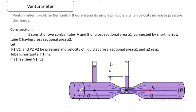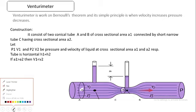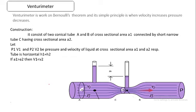As shown in the figure, it consists of two conical tubes A and B having the cross-sectional area A1, which are connected by a short and narrow tube C having the cross-sectional area A2. Tubes A and C both have different cross-sectional areas.